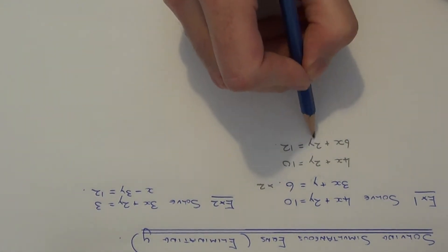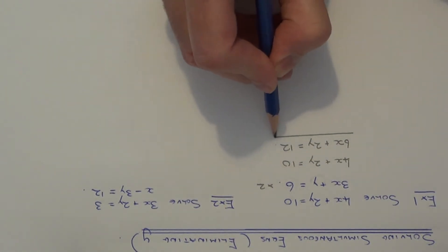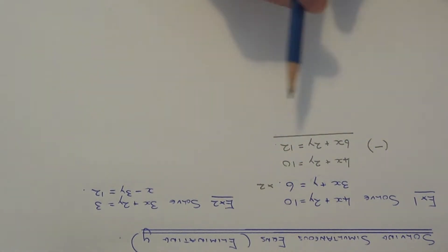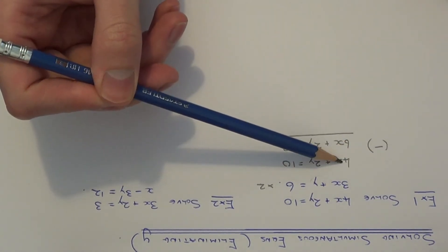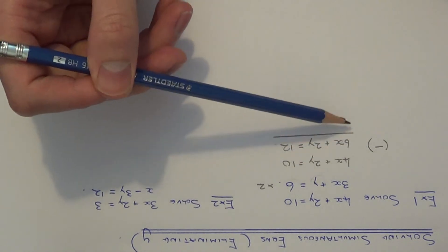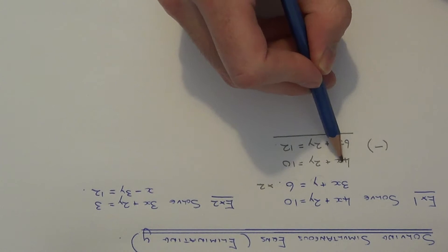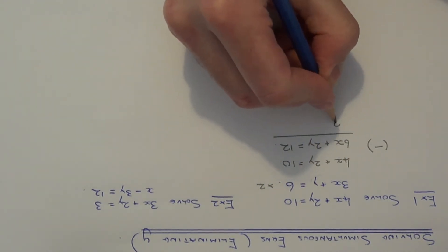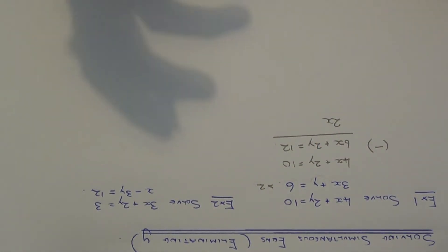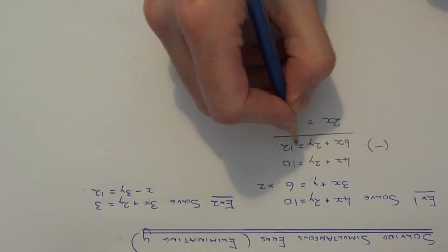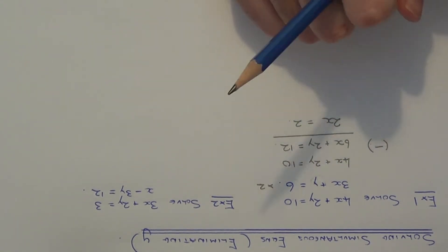Now the numbers before y in both equations are the same, so you can subtract these two equations. I want to do the bottom equation and take away the top equation, as this will not give any negative numbers and will be easy to solve. So 6x take away 4x is 2x. 2y minus 2y gives 0y — we've eliminated the y's, which is what we wanted. And 12 take away 10 is 2, so we've ended up with the equation 2x equals 2.